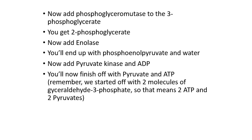Whenever we have a kinase enzyme, something happens with ATP — either it's broken down or created. A dehydrogenase enzyme means hydrogens are leaving a molecule. We left off with two 3-phosphoglycerate molecules. We add phosphoglycerate mutase to change the structure, moving the phosphate from position 3 to position 2 to give 2-phosphoglycerate.